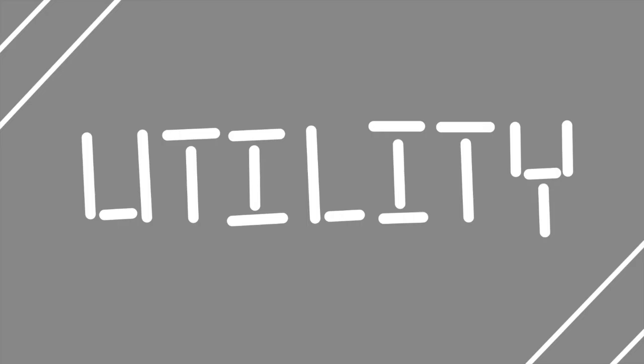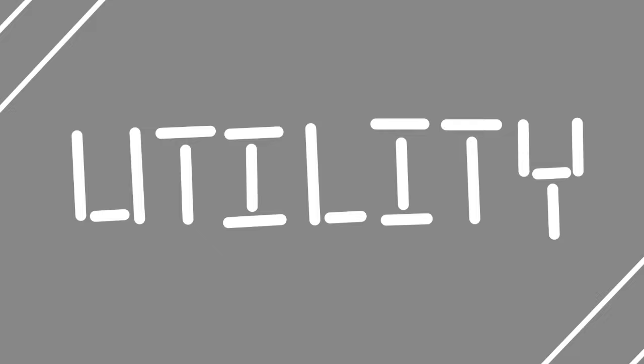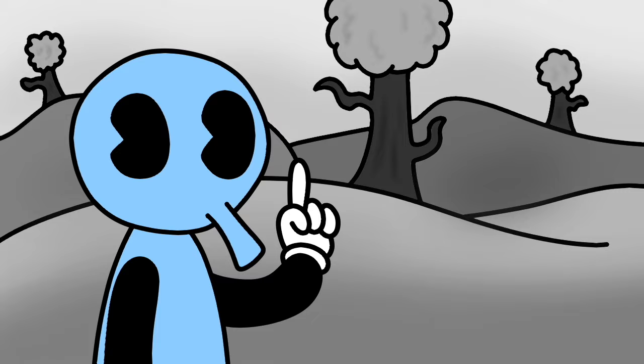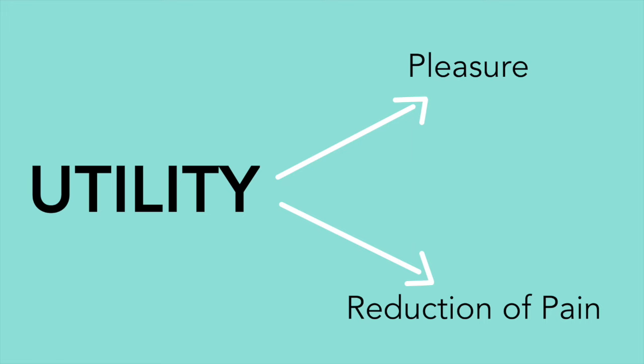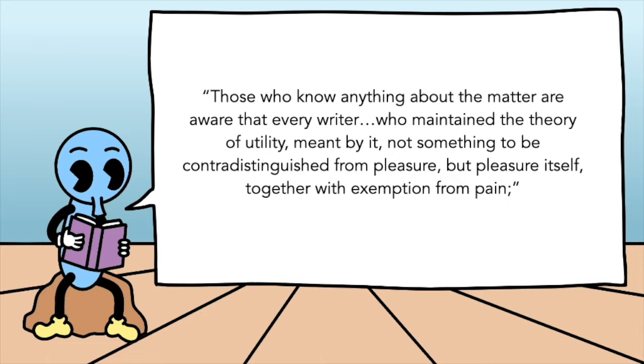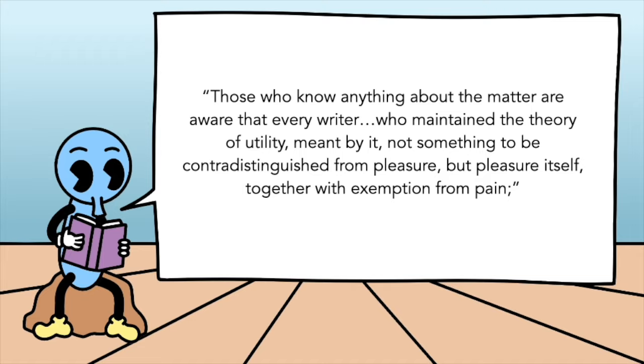So Mill first addresses this word, utility. It could sound cold and robotic, only really focusing on efficiency. But this is a misunderstanding of the word. To Mill and other utilitarians, utility is connected to pleasure and the lessening of pain. Every writer who maintained the theory of utility meant by it not something to be contradistinguished from pleasure, but pleasure itself, together with exemption from pain. So even if we often think of utility as usefulness or efficiency or practicality, instead think of pleasure.